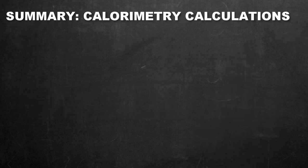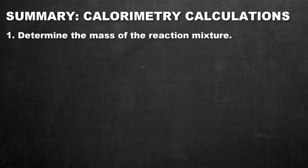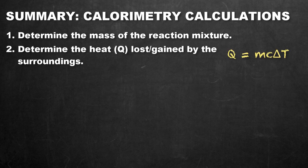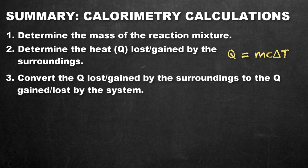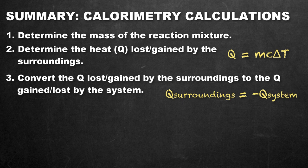Now that we understand what a calorimeter is and how we use it to establish enthalpy change, let's quickly review the steps. Step one: determine the mass of the reaction mixture. For a chemical reaction like an acid-base neutralization, combine the masses of both solutions, assuming they have the properties of water. When adding a solid to water, just use the mass of the solution. Step two: use Q = mcΔT to establish the heat absorbed by the surroundings — we're measuring the delta T, the temperature change of the aqueous solution. Step three: take the Q and change the sign, because whatever heat was lost or gained by the system must have been equally gained or lost by the surroundings.